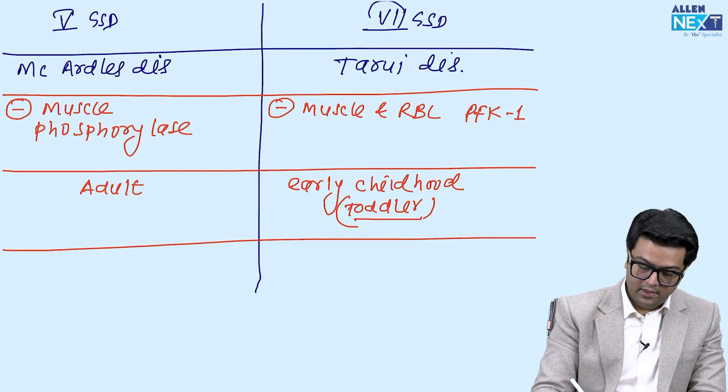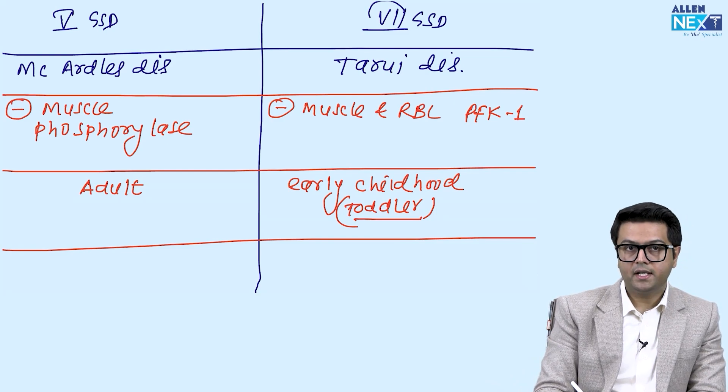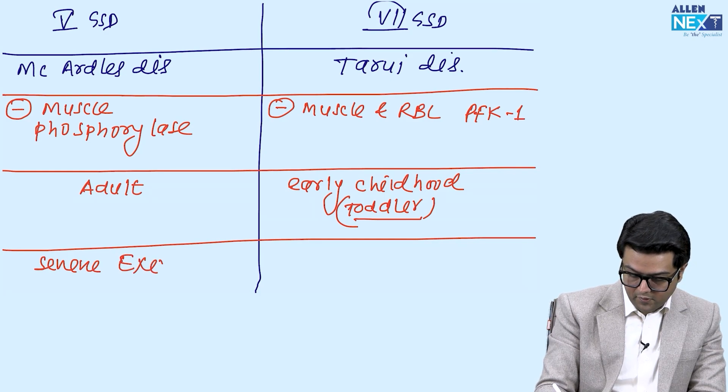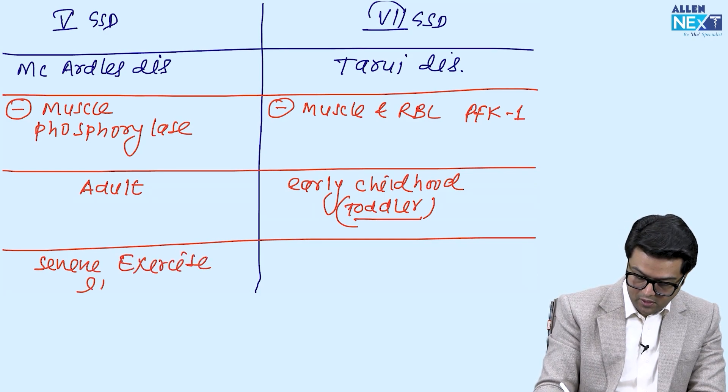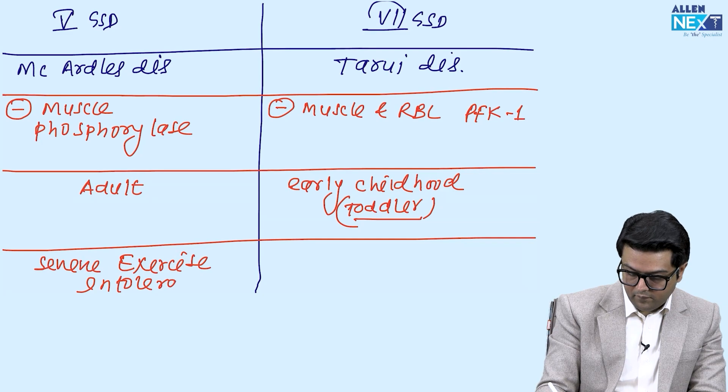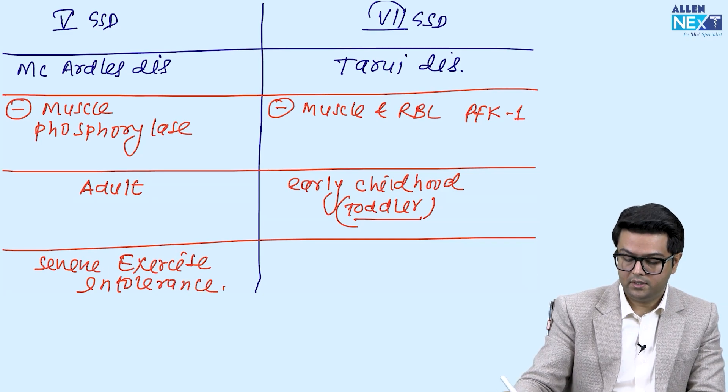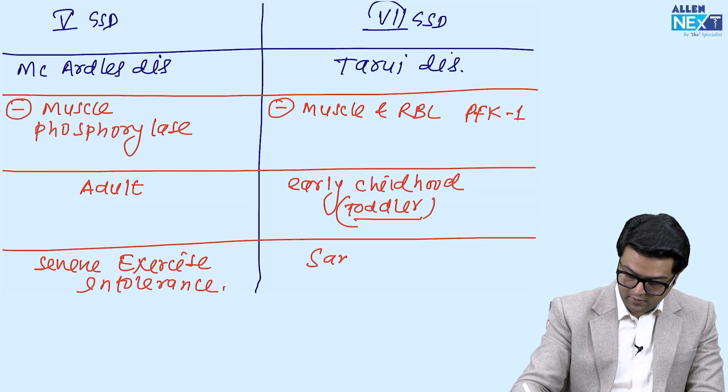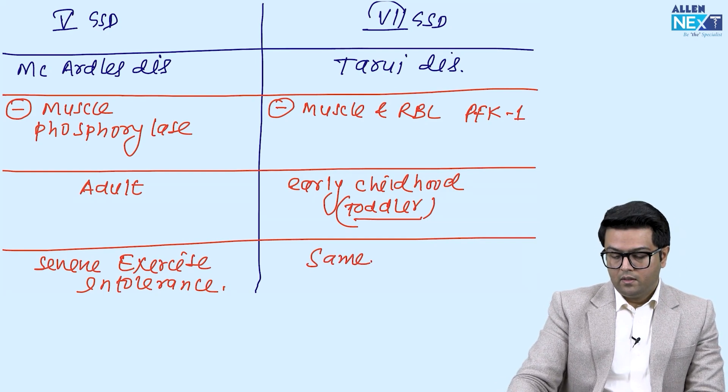What are the symptoms? That is severe exercise intolerance. And in this case, type 7 GSD, that is the same.